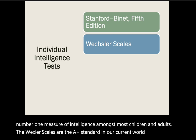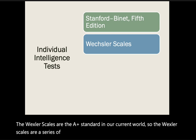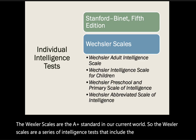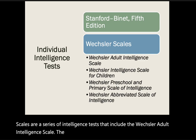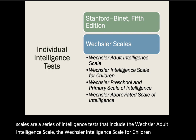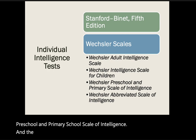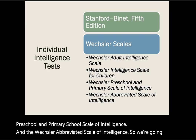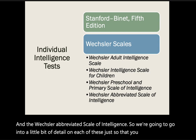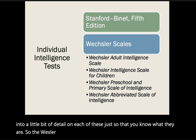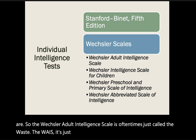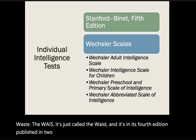The Wechsler scales are a series of intelligence tests that include the Wechsler Adult Intelligence Scale (WAIS), the Wechsler Intelligence Scale for Children (WISC), the Wechsler Preschool and Primary Scale of Intelligence (WPPSI), and the Wechsler Abbreviated Scale of Intelligence (WASI). The WAIS is often just called the WAIS, and is in its fourth edition published in 2008. It can be used with adults across the lifespan.